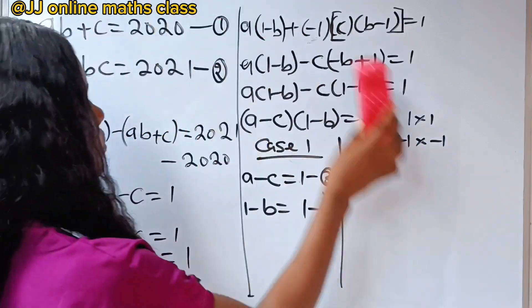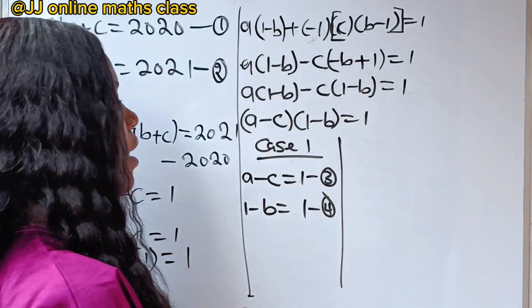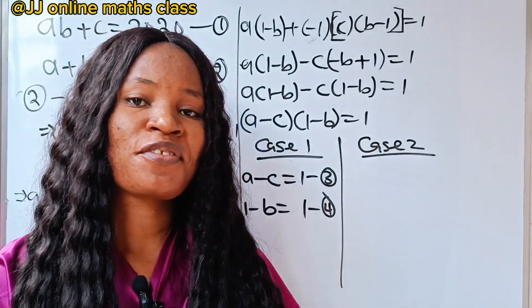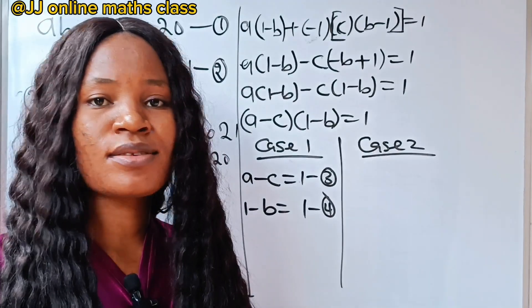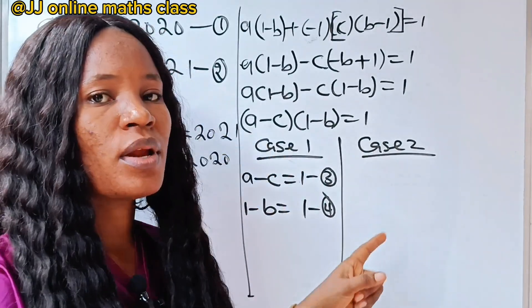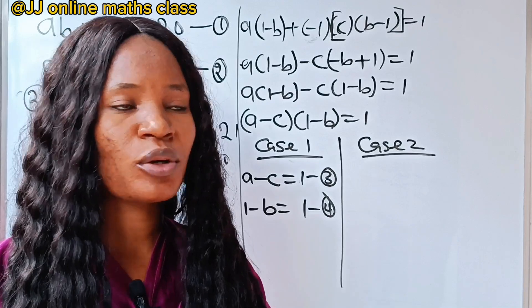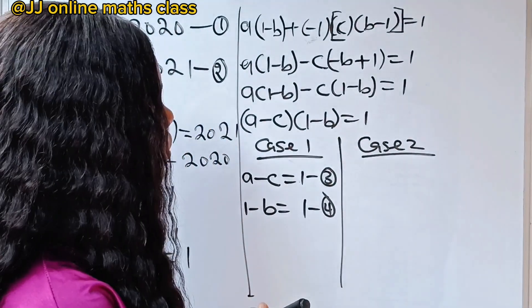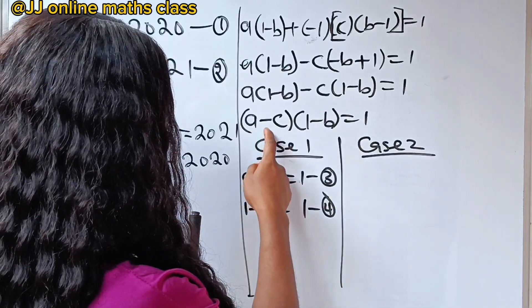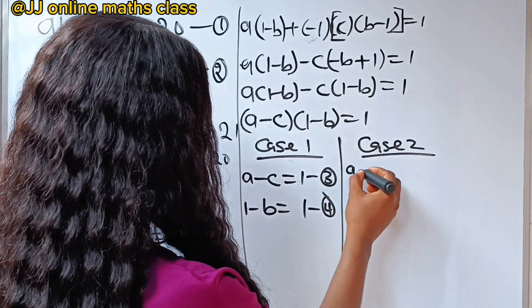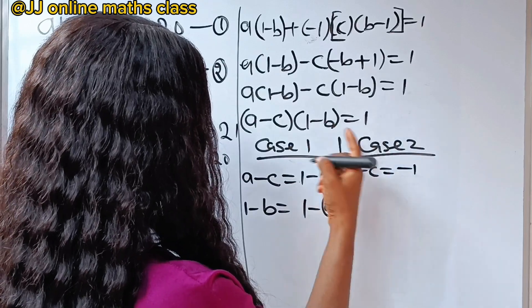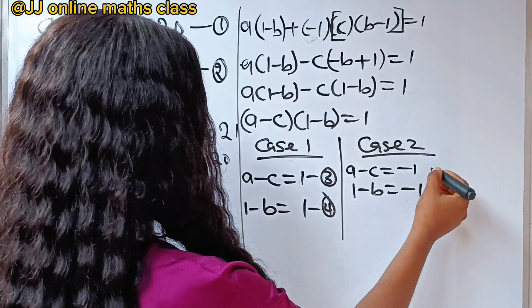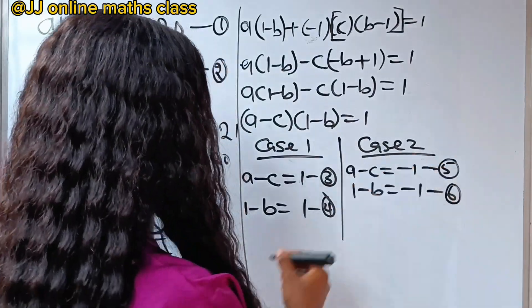For case 2: A minus C equals minus 1 (equation 5) and 1 minus B equals minus 1 (equation 6).